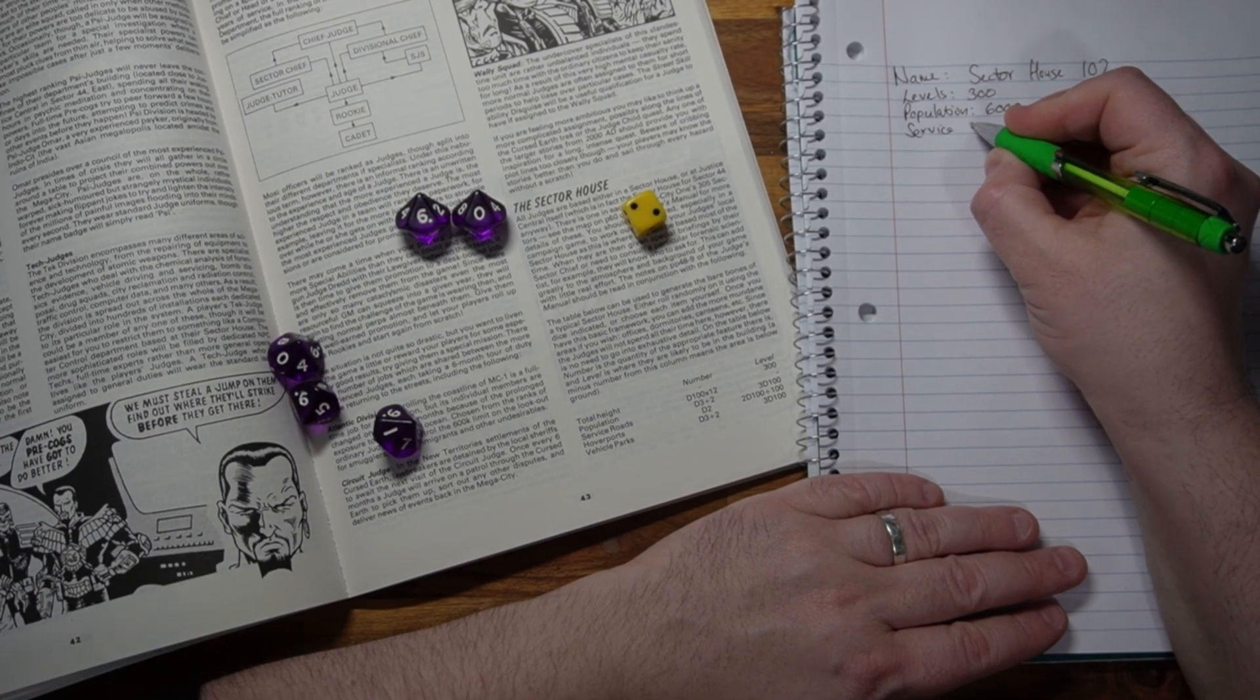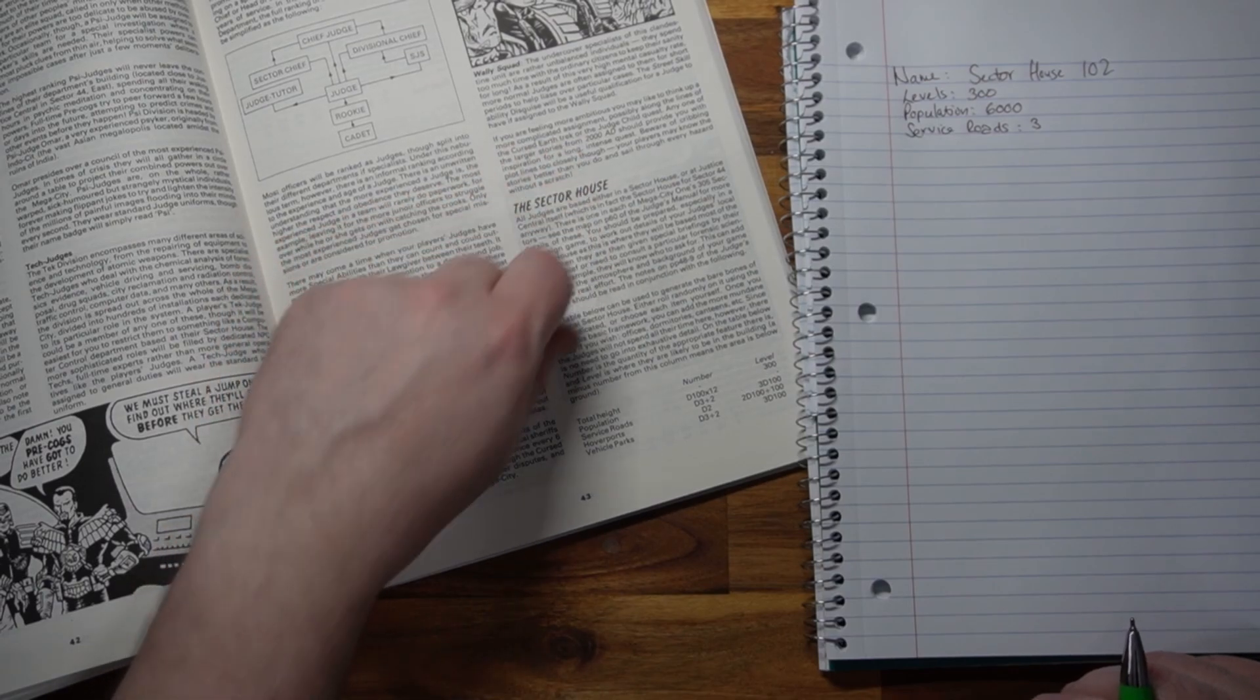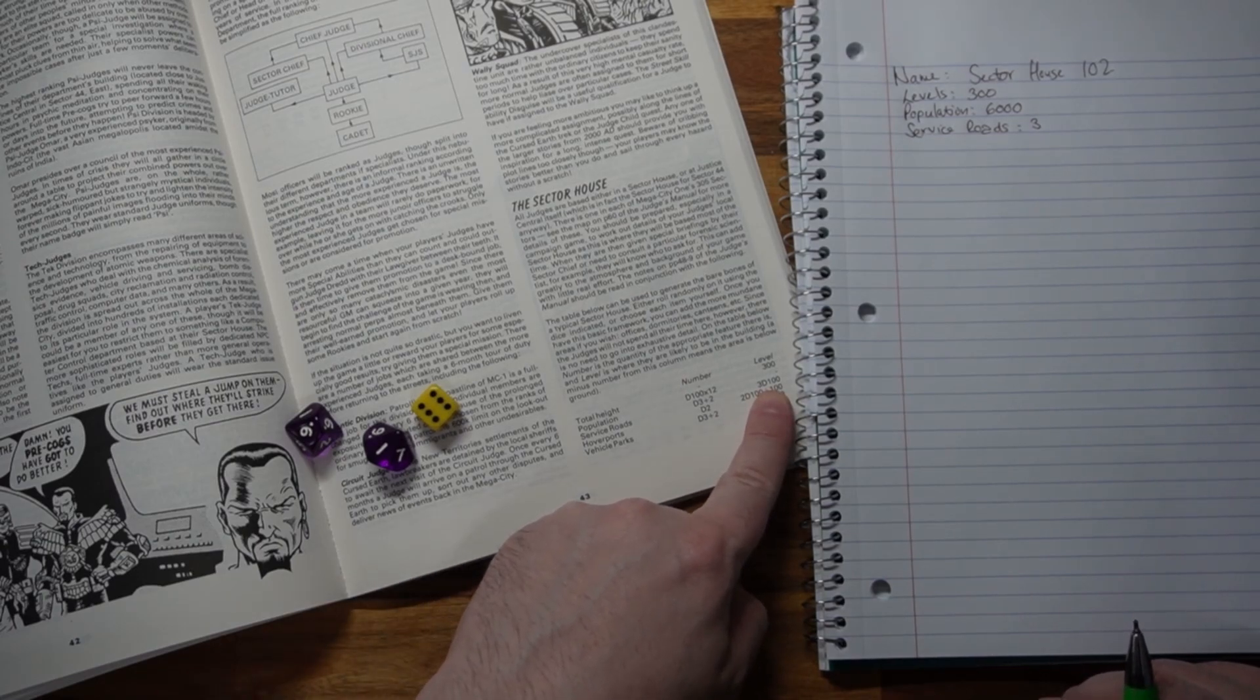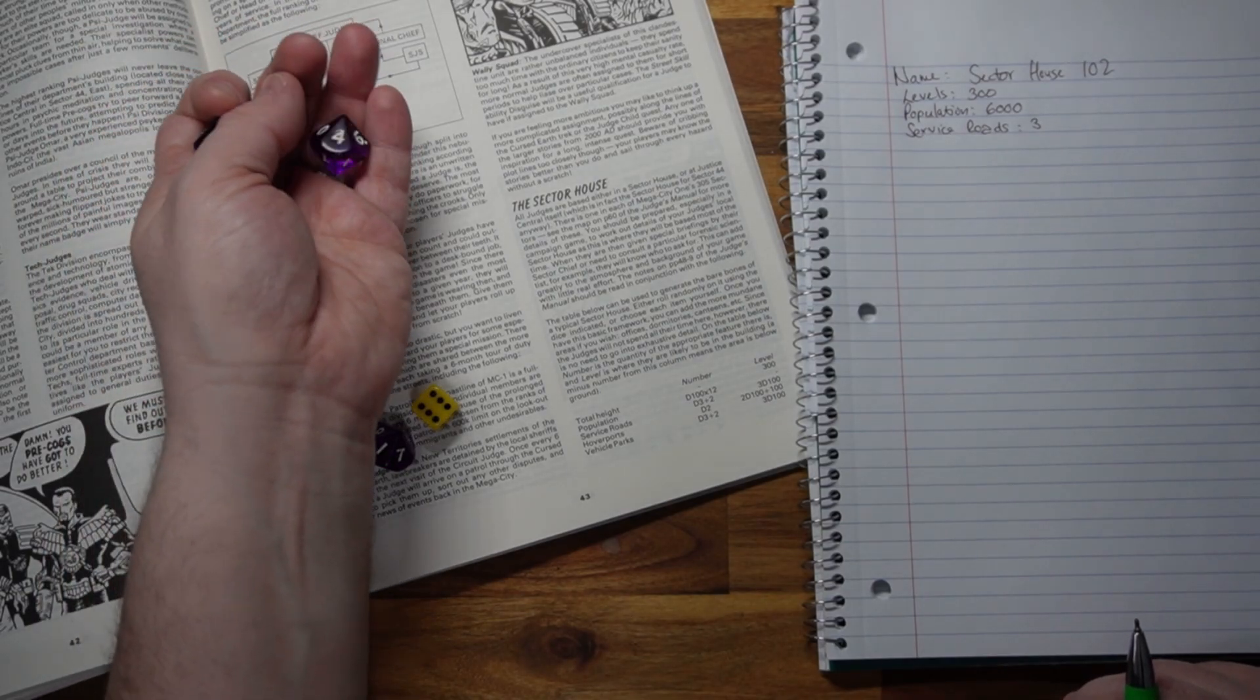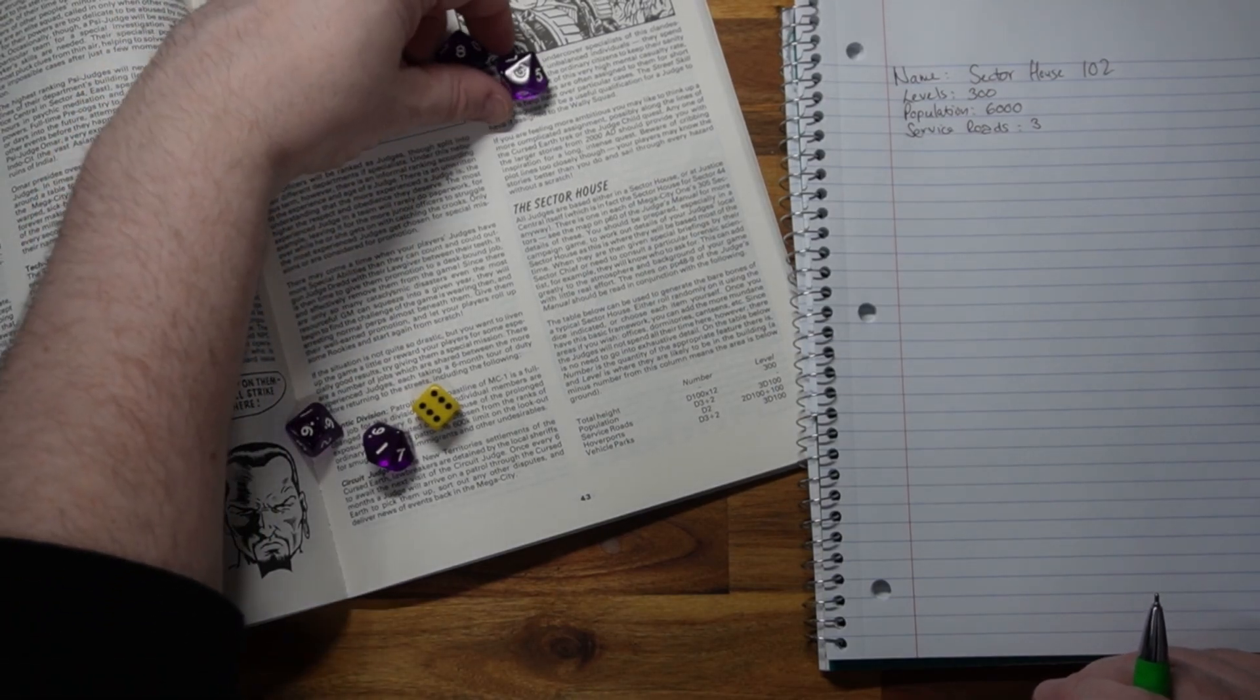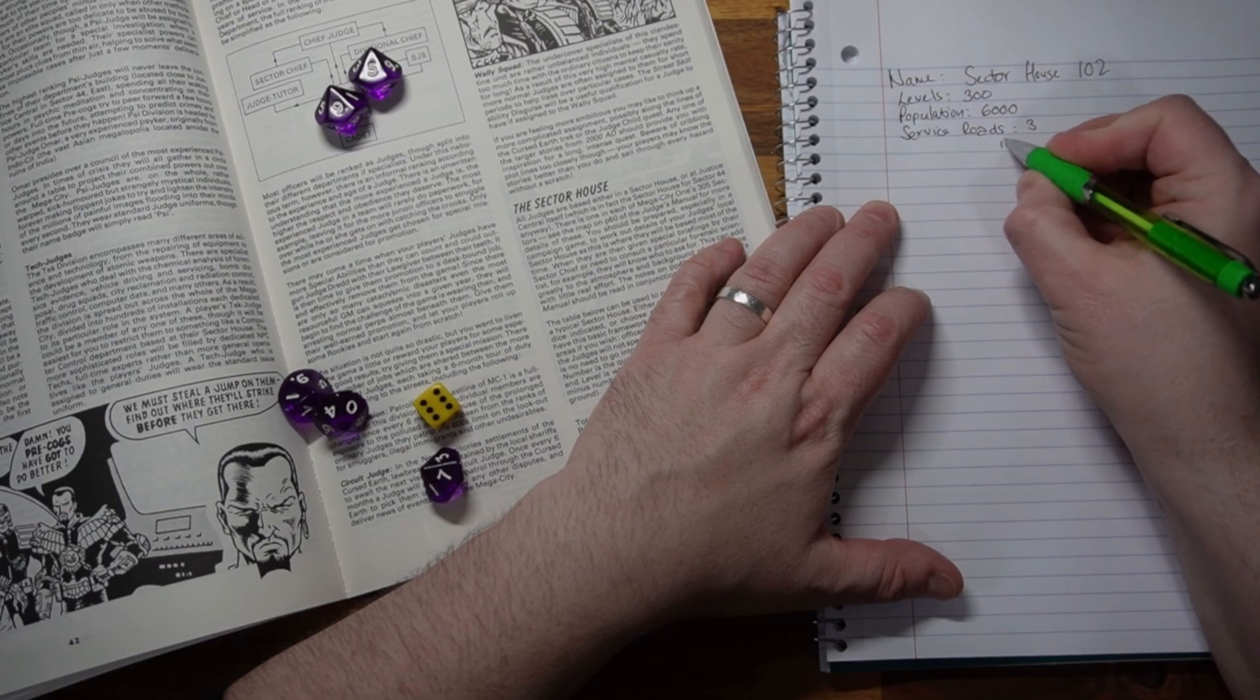So service roads d3 plus 2. So it's 1 plus 2 is 3 service roads. Wow, that's not many. Service roads 3. And they are on, I assume they're going to be on different levels. Make no sense to have all of them going into one spot, would it? So d3 100 or 3 100. 3 d100. That makes no sense to me because then it could possibly be on the highest level. Anyway, let's give it a go. So we've got to do 3 100s. So first one is 36 plus 83, 119, 149, 158. So one is on 158.